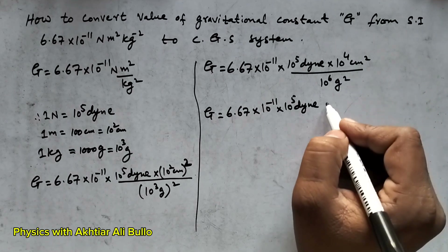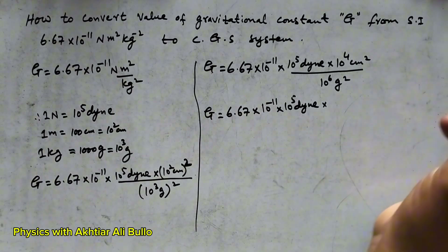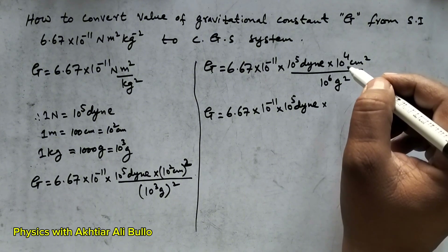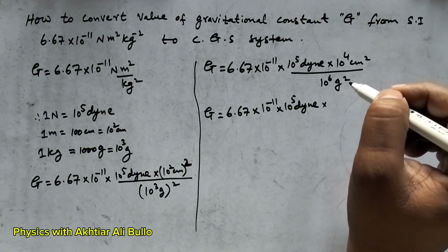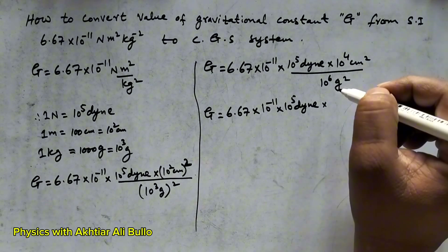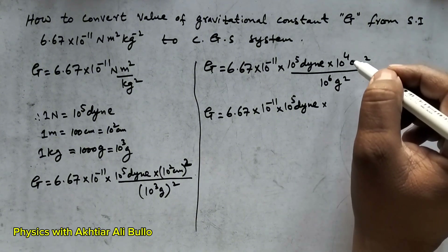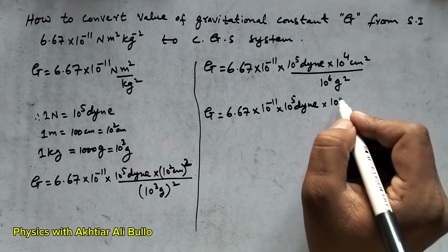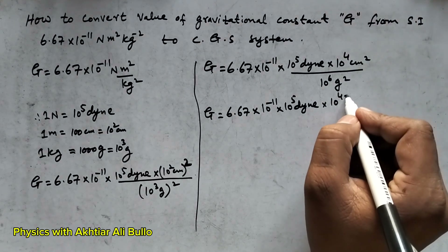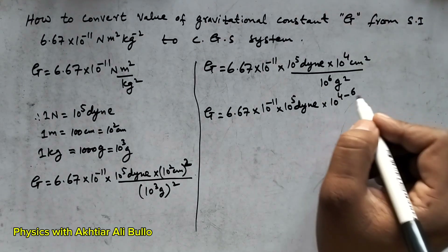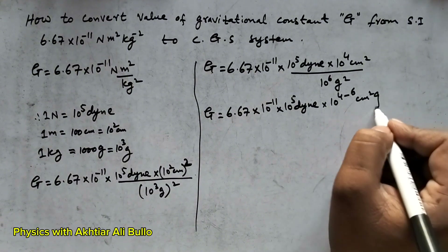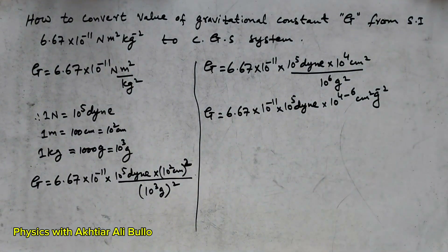When the bases are the same, we subtract the power of the denominator from the power of the numerator. So 10⁴ divided by 10⁶ gives 10⁴⁻⁶, and centimeter squared per gram squared remains the same.